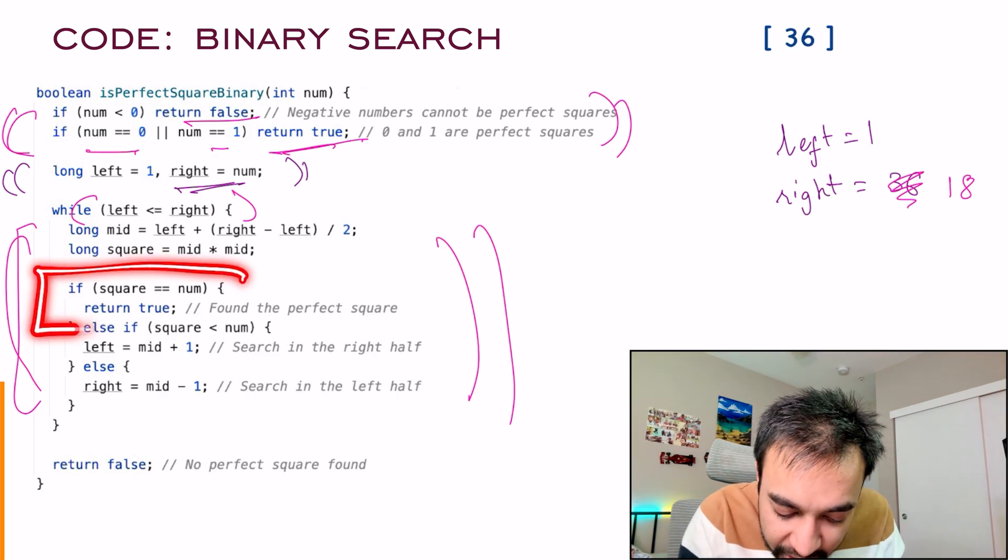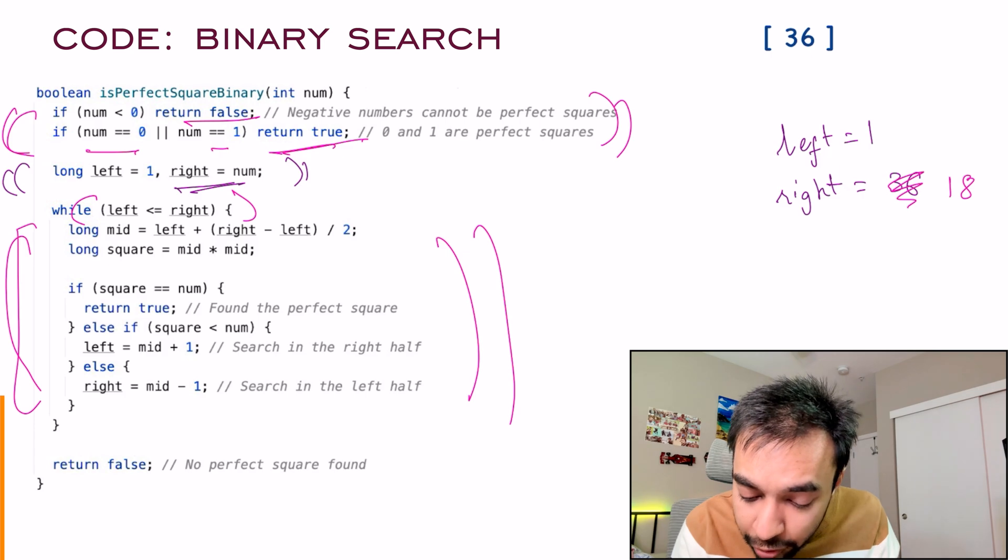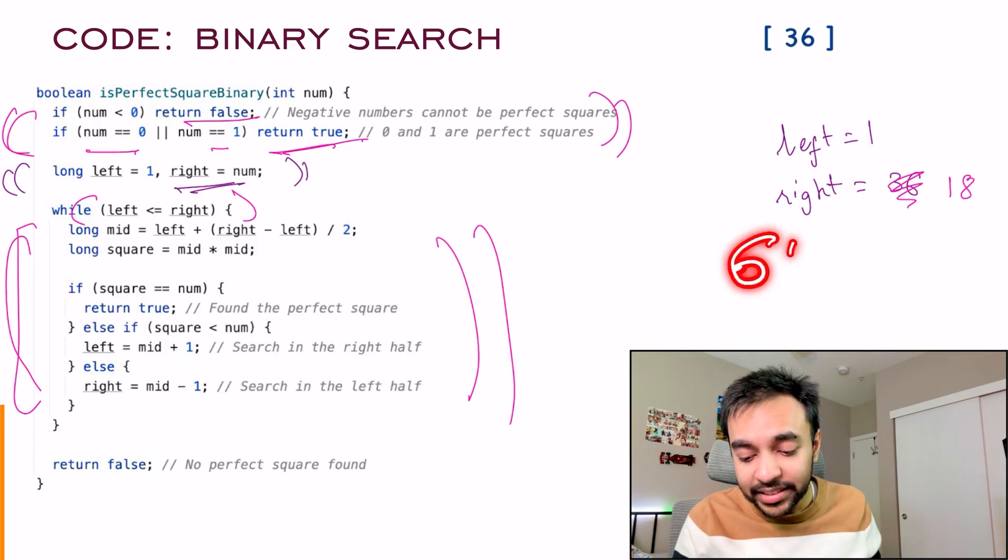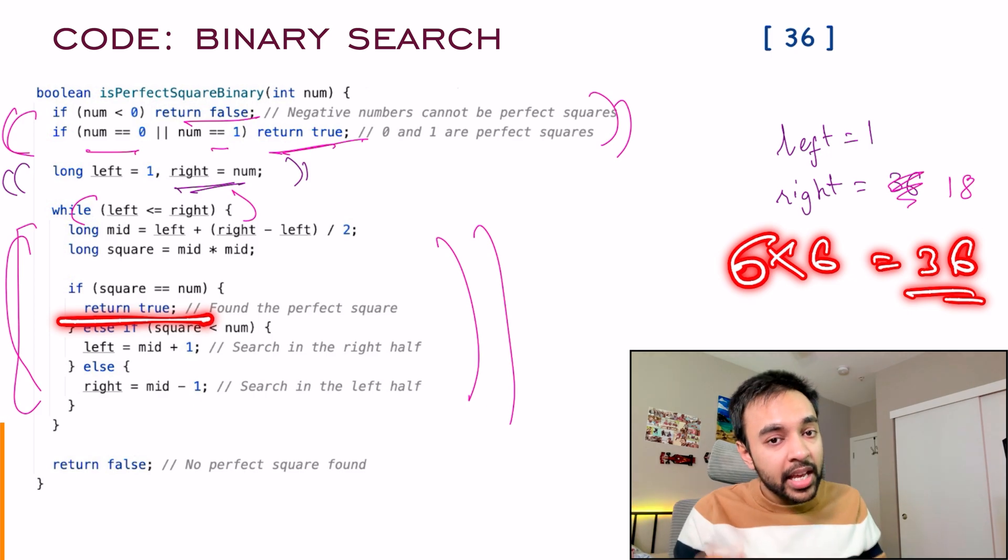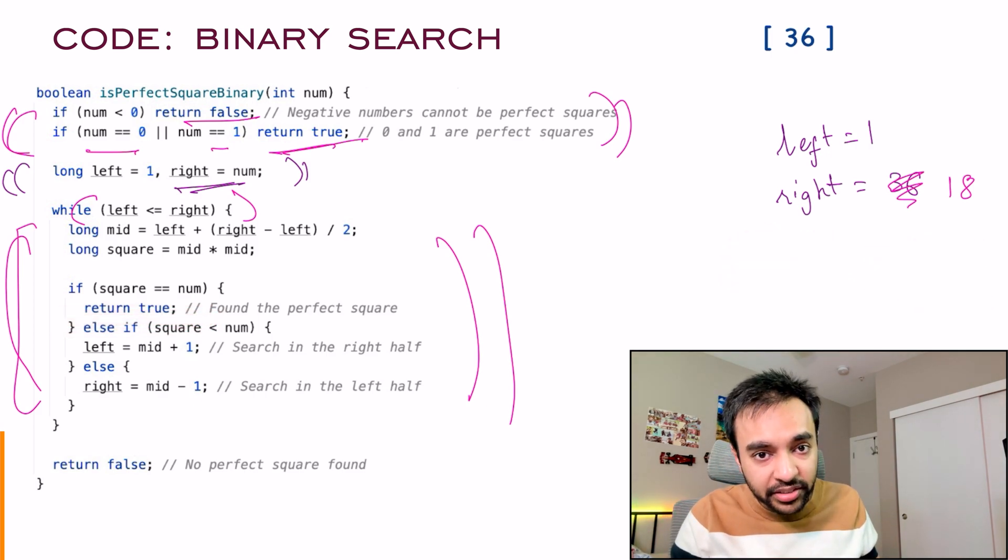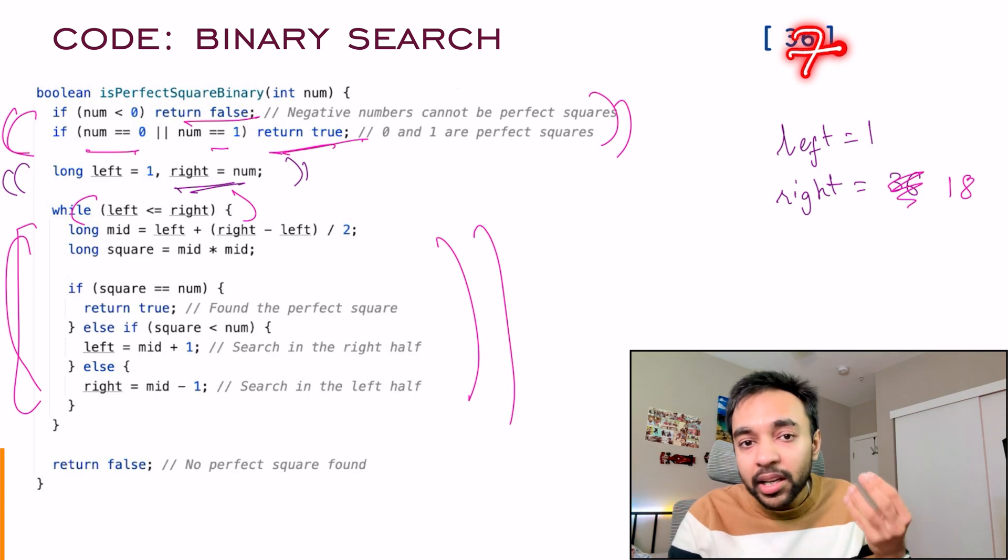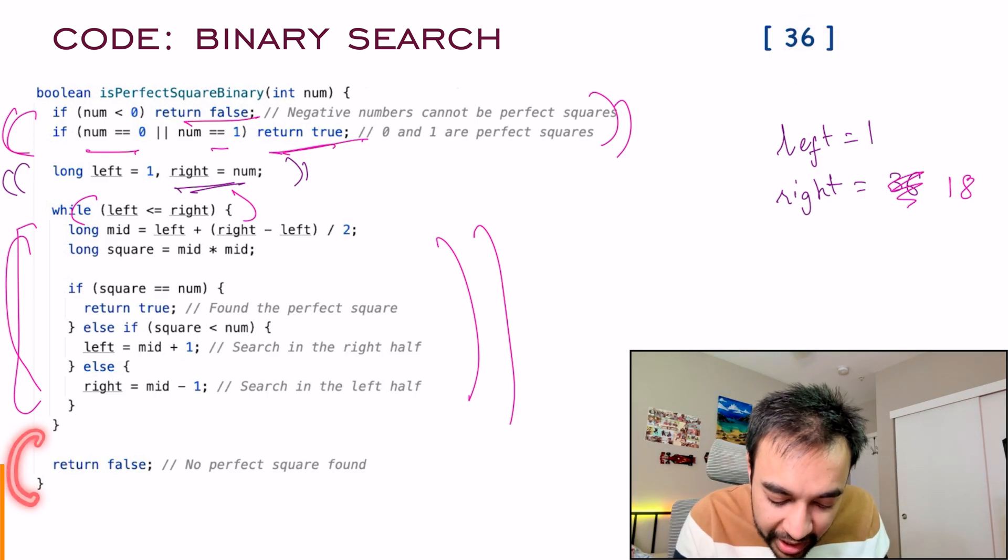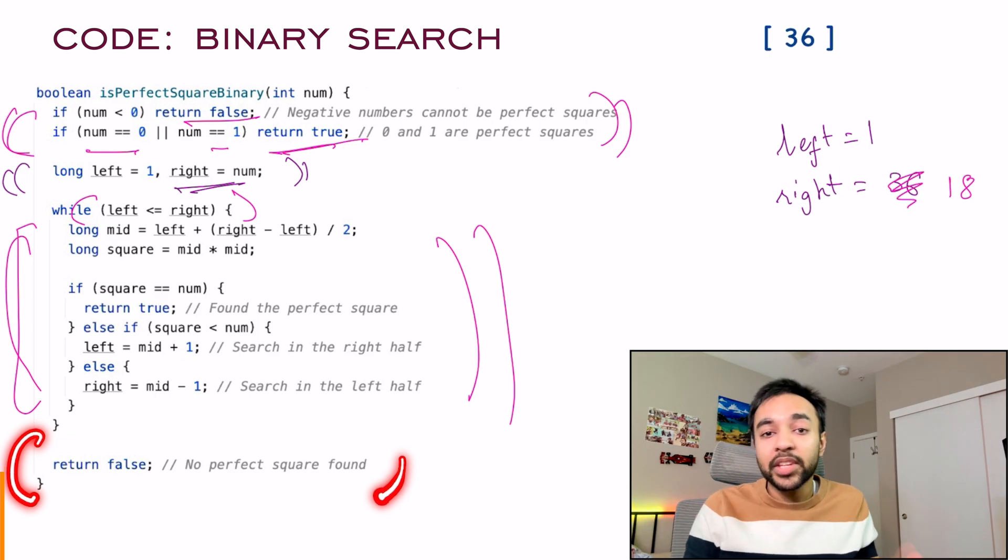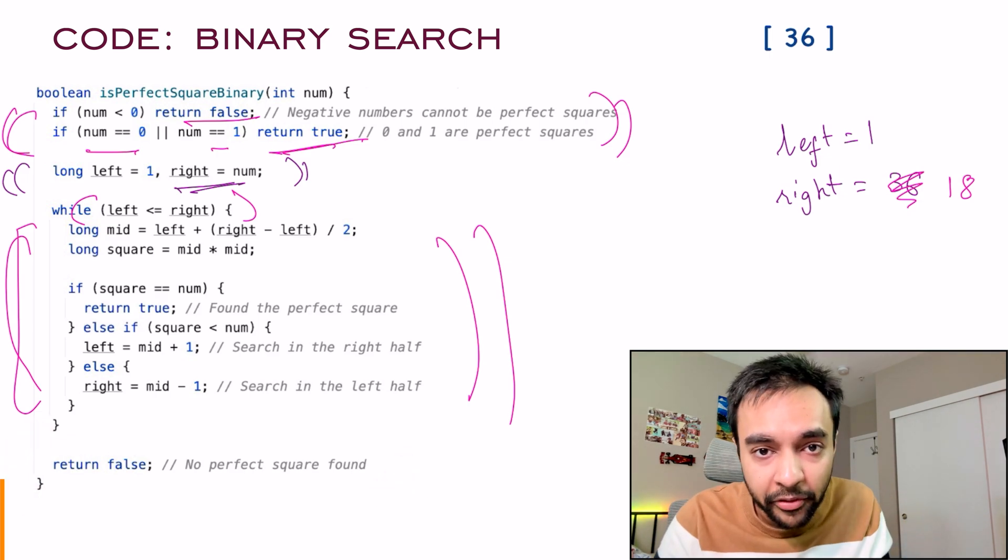If you find the square equals to number, that means if you land at six, somehow six into six will be 36. And you can simply return a true. If none of these conditions matches, and let's say the number was 37, nothing will happen. Nothing will match. So this loop will end. And at the very end, you can simply return a false. It means the number was not a perfect square.